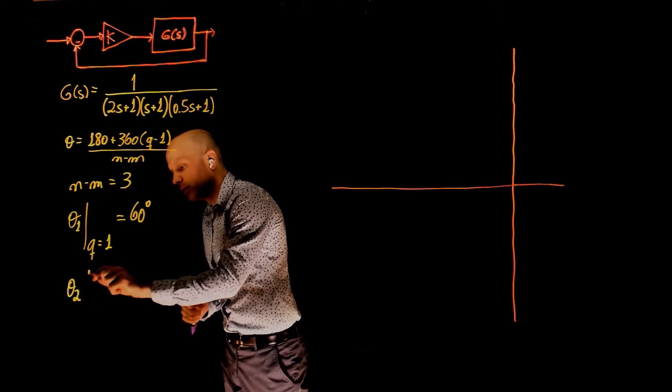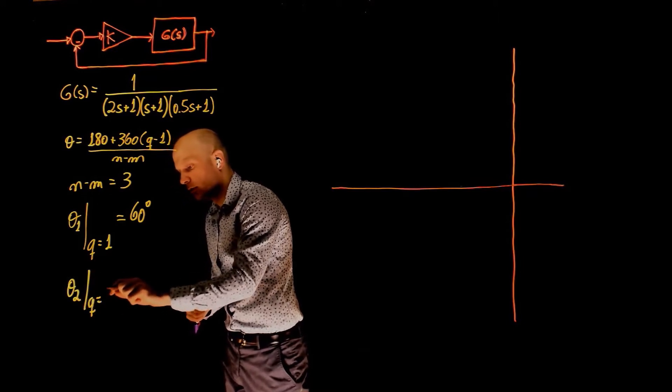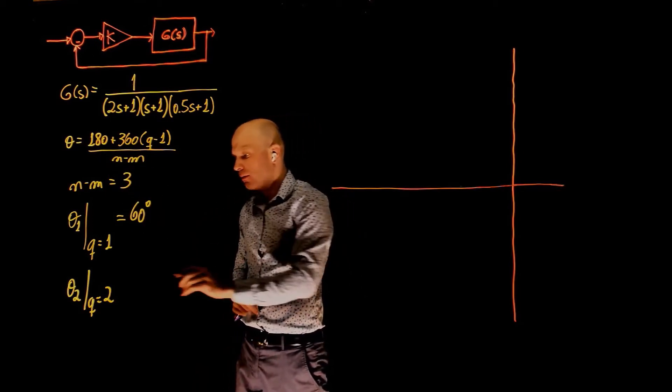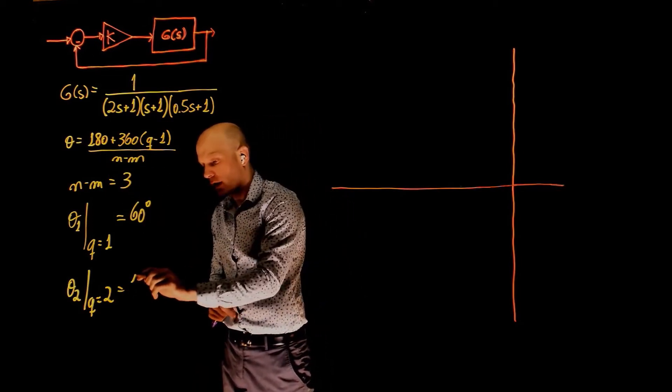For theta two, we set q equals to two, and now we have 180 plus 360 divided by three. This is 180 degrees.